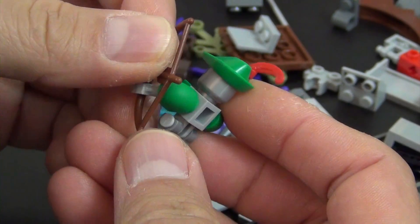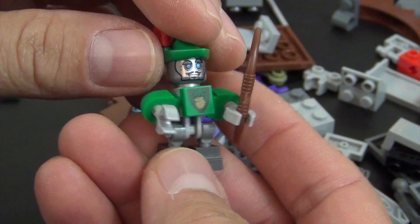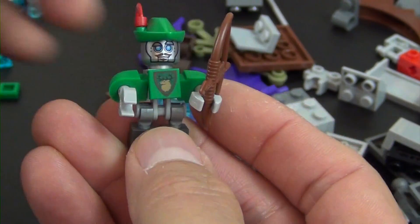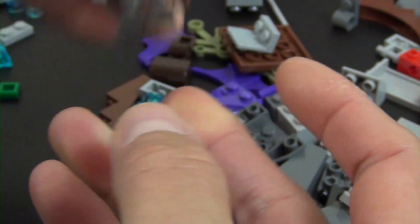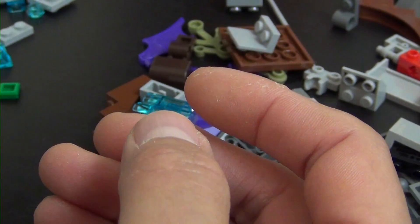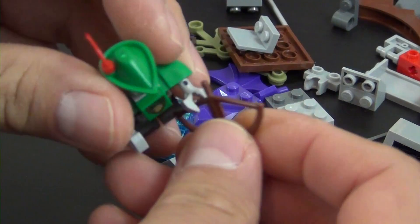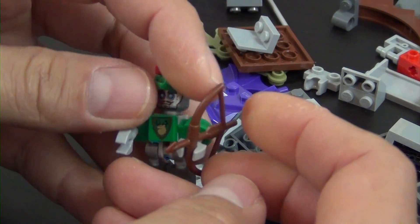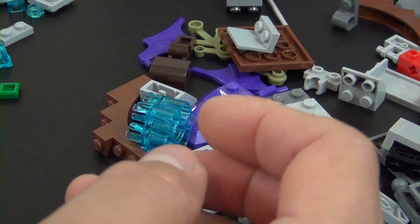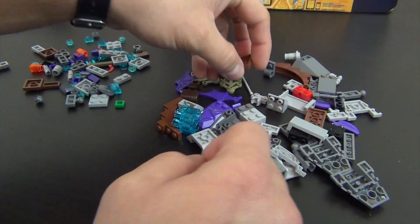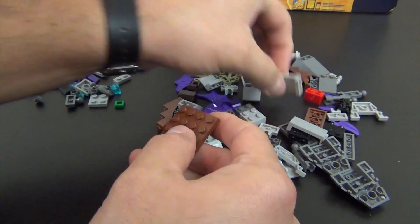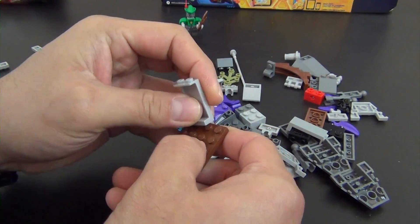And the last thing we do is add the bow and arrow. So that is our little hoodlum. Alright, that bow and arrow is not going to stay on very well.